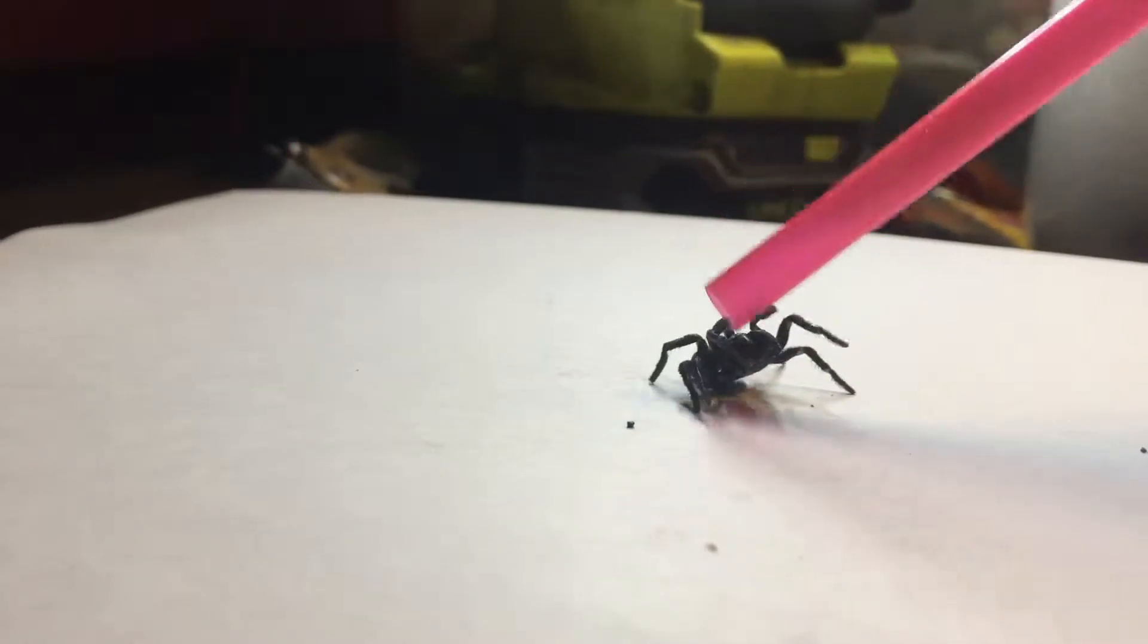It looks like it could be a mouse spider because the top of it's quite fat. You can see it rearing up on its back legs trying to strike the straw, like you see those famous pictures of funnel webs.